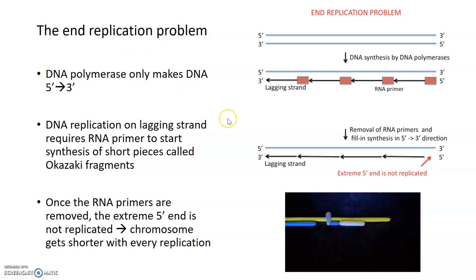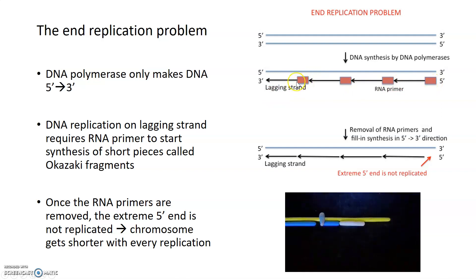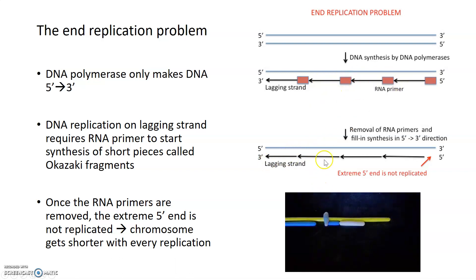To get around this problem, DNA polymerase uses RNA primers, which it then extends during the process of replication. Because these RNA primers have the three prime OH necessary for DNA polymerase to add nucleotides to and synthesize pieces on the lagging strand from five prime to three prime. Then once those RNA primers are removed, DNA synthesis can fill in the gaps left behind.